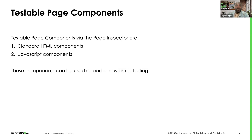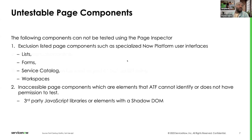These components can be used for custom UI testing. For the untestable page components, there are two categories: the first being the exclusion-listed page components — examples include items from Service Catalog and Workspaces. These are not part of custom UI testing because there are dedicated test steps that can be used to test those components.